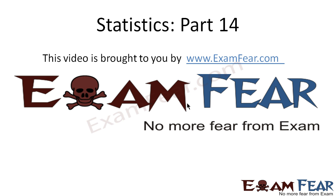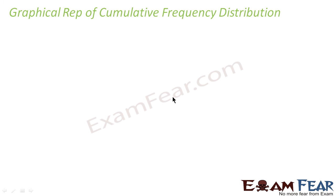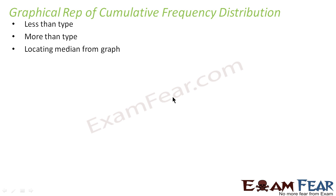Hello friends, this video on statistics part 14 is brought to you by examfear.com. Before watching this video, please make sure that you have watched parts 1 to 13. Today we cover graphical representation of cumulative frequency distribution. There are three kinds: less than type, more than type, and a method of locating the median from the graph. We'll draw a less than type graph, a more than type graph, and study how to locate the median.